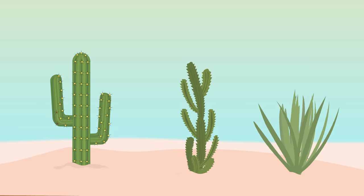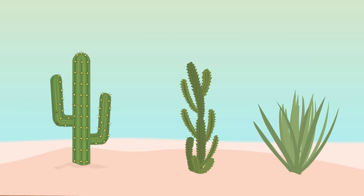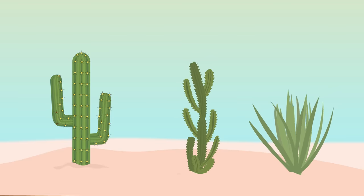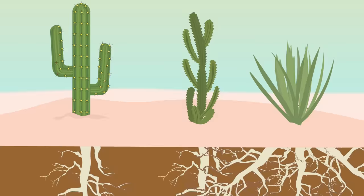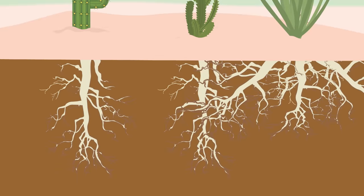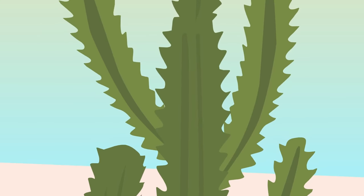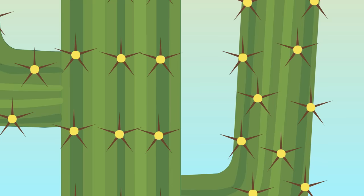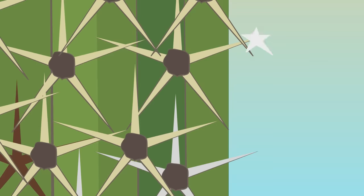Certain plants manage to live in the desert conditions. They survive by living without fresh water for long periods of time. They have adapted by growing long roots that absorb water deep underground and can have thick leaves to store it. To protect themselves from animals eating them, plants such as the cactus will have spines and needles.